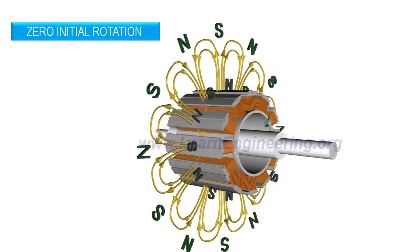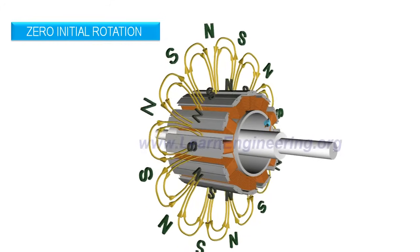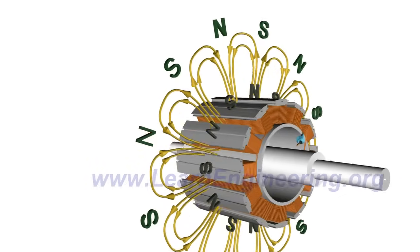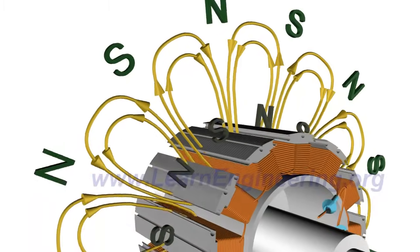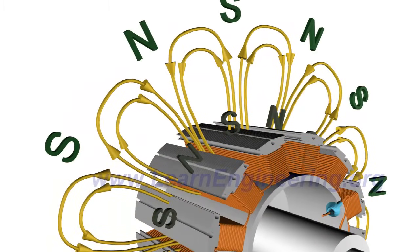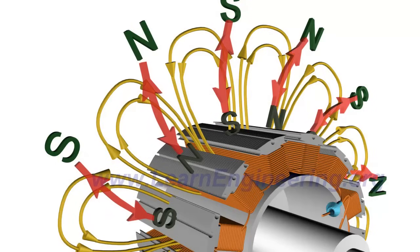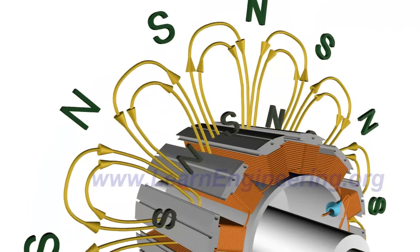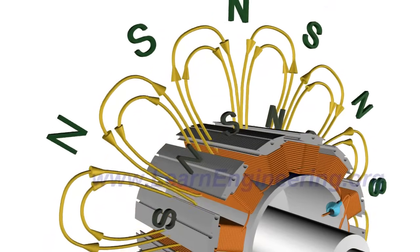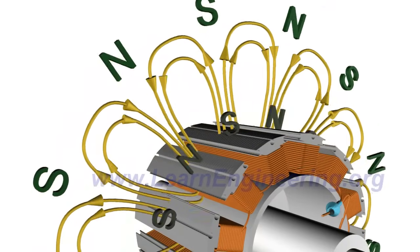But if the rotor has no initial rotation, situation is quite different. North pole of the rotor will get attracted by south pole of RMF and will start to move in the same direction. But since the rotor has some inertia, this starting speed will be very low. By this time, south pole of RMF will be replaced by a north pole, so it will give repulsive force. As a net effect, rotor won't be able to start. Synchronous motors are not inherently self-starting.